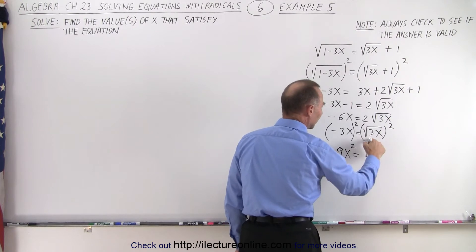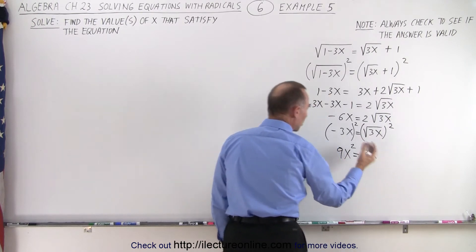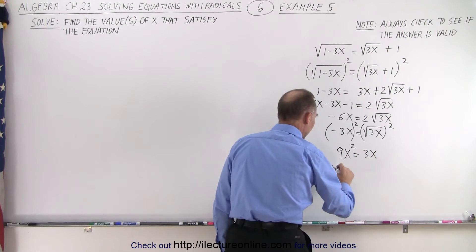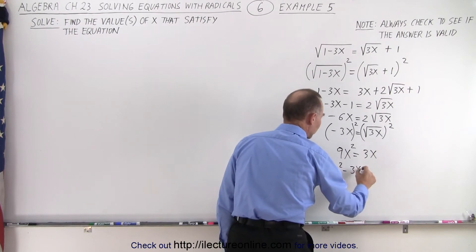And so on the left side, we get 9x squared. And on the right side, we simply remove the radical, we get 3x. When we move that over, that gives us 9x squared minus 3x equals 0.